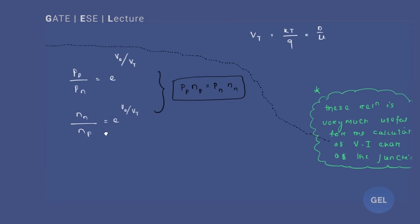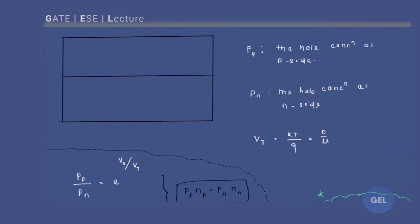Let's see what the formula of contact potential looks like and how it is important for the gate exam. Your contact potential V₀ will be nothing but Vt — the thermal voltage — times ln(pp/pn), where pp is the hole concentration at the P side and pn is the hole concentration at the N side. Vt is the thermal voltage from the Einstein relation. From here also there is a chance of exam questions related to contact potential.